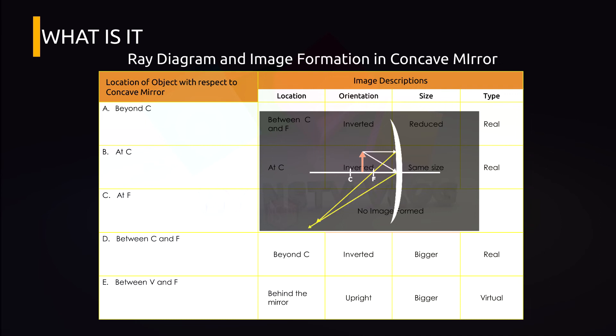So let's try another one. The object is between V and F. So this time, you're going to use the PF ray and the V ray. What did you notice? So the reflected rays will not meet, but if you're going to extend a line from the reflected rays, it will meet behind the mirror. So let's describe the image. The image location is behind the mirror, it is upright or erect, it becomes bigger, and it is virtual. Did you enjoy it?